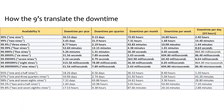Four nines means the system will be down for 53 minutes per year, which comes down to 9 seconds per day. Nine nines means a yearly downtime of 32 milliseconds, approximately 87 microseconds of daily downtime. Apart from these nine-nines structures, businesses can also opt for other availability patterns such as 95%, 97%, or 98% availability based on requirements.